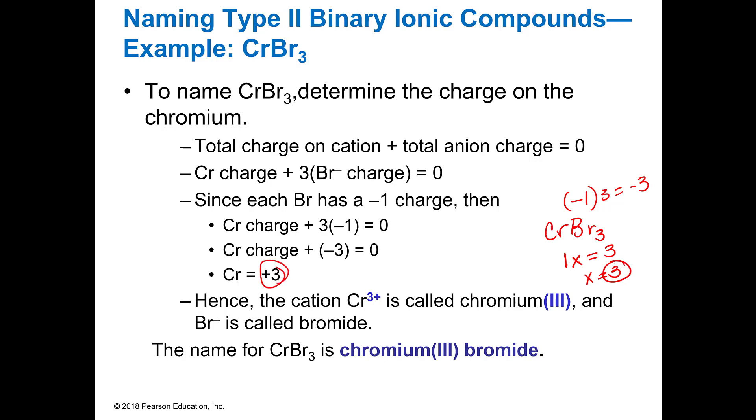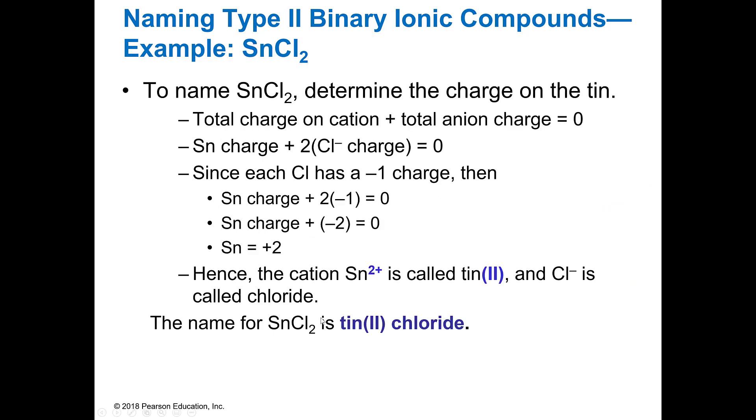So that's how I know that it's chromium three. So then I know that I'm going to write it chromium, Roman numeral in parentheses three, bromide. And this tells me what the charge is. I do not tell you how many bromines there are. I tell you what the charge is on the metal.